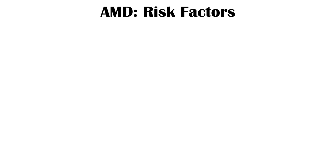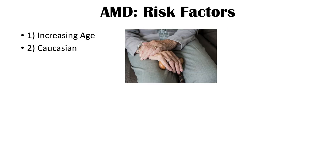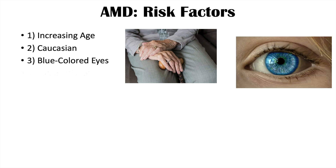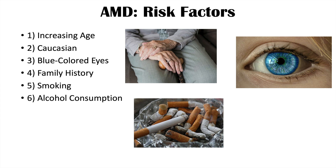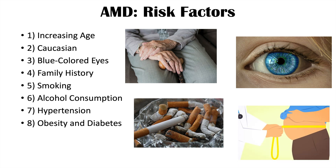The risk factors for this condition include increasing age, which leads to an exponential rise in risk. Being of Caucasian ethnicity and having blue-colored eyes are also risk factors. Having a family history — particularly a first-degree relative such as a parent with the condition — raises your risk. Smoking, alcohol consumption, hypertension, obesity, diabetes, and increased sun exposure are additional risk factors.